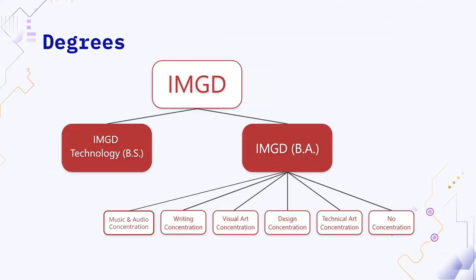Now let's talk about your degrees. IMGD is several degrees in a trench coat. We're broken up majorly into IMGD Technology and IMGD BA — Bachelor of Science, Bachelor of Arts. IMGD Tech is fairly straightforward, there's only one major. IMGD BA is the trench coat of six paths you can take, including music and audio, writing, visual arts, technical arts, design, and then not having a concentration. For all these degrees, there are designated tracking sheets available to you. If you are planning to be an IMGD major, one of your first steps should be downloading this tracking sheet and starting to plan your next four years.